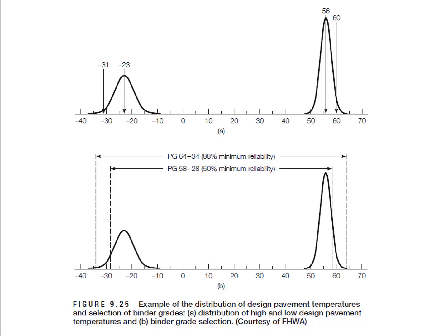In this example, the maximum temperatures throughout the years follow the normal distribution with an average of 56 degrees Celsius and a standard deviation of 2 degrees Celsius. Similarly, the minimum temperatures also follow the normal distribution with an average of negative 23 degrees Celsius and a standard deviation of 4 degrees Celsius.